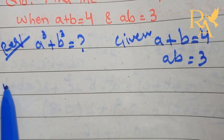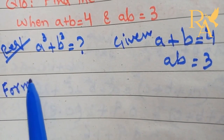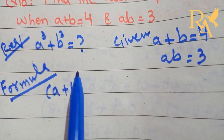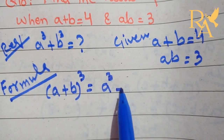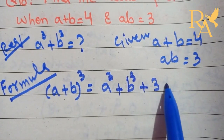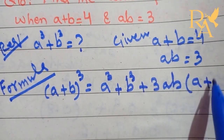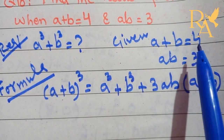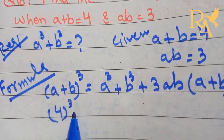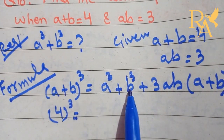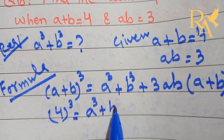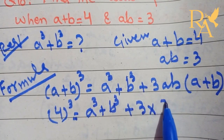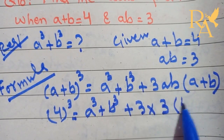Now use the formula. A plus B whole cube is equal to A cube plus B cube plus 3AB and A plus B. Now put the values: A plus B is equal to 4, so 4 cube is equal to A cube plus B cube plus 3. The value of AB is equal to 3, and the value of A plus B is equal to 4.